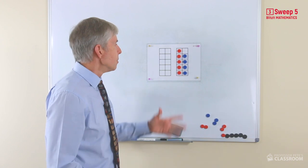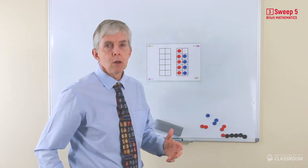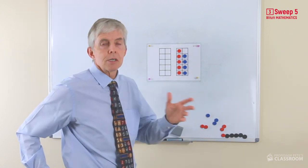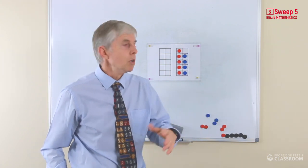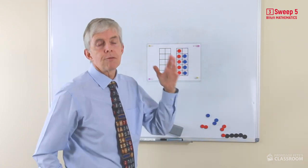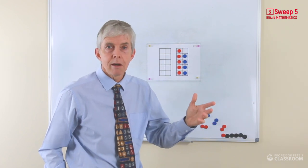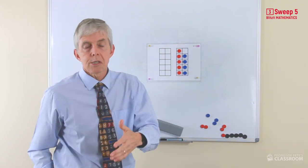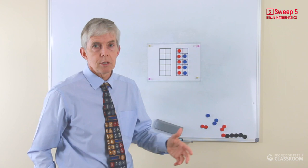Now looking at the ten frame and the counters, there's no need to go beyond a simple example because the process is exactly the same. If you know double four is eight, then four plus five will be nine. If you know double six is twelve, six plus seven will be thirteen.